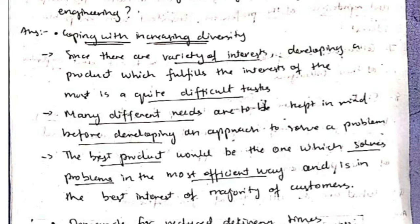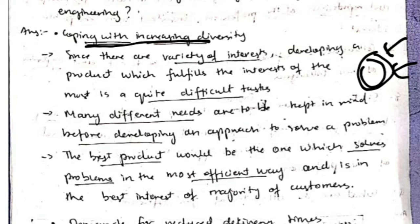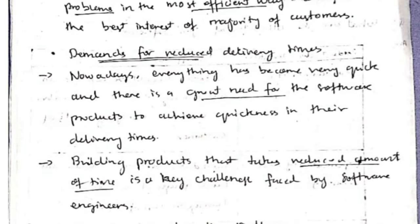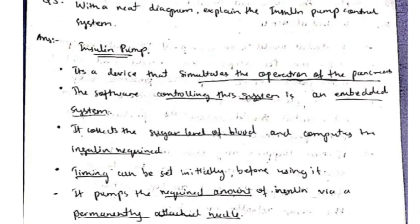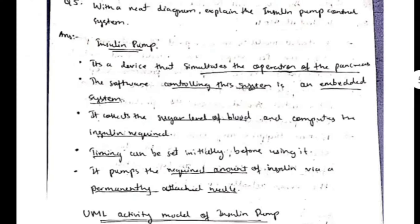Key challenges facing software engineering: first, increasing diversity — many people have different views about the product, and successful software engineering takes all those issues into consideration to fulfill the needs of the majority. Second, demand for reduced delivery times — the product should be quick and give results as fast as possible. Third, developing trustworthy software — it should provide security for data.